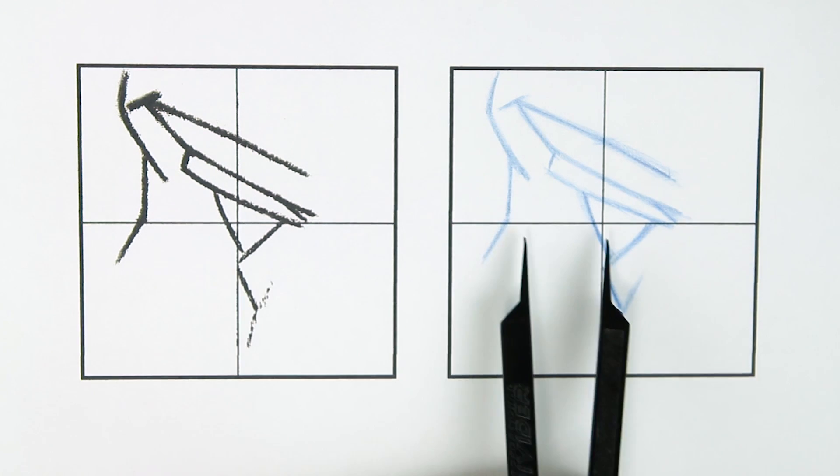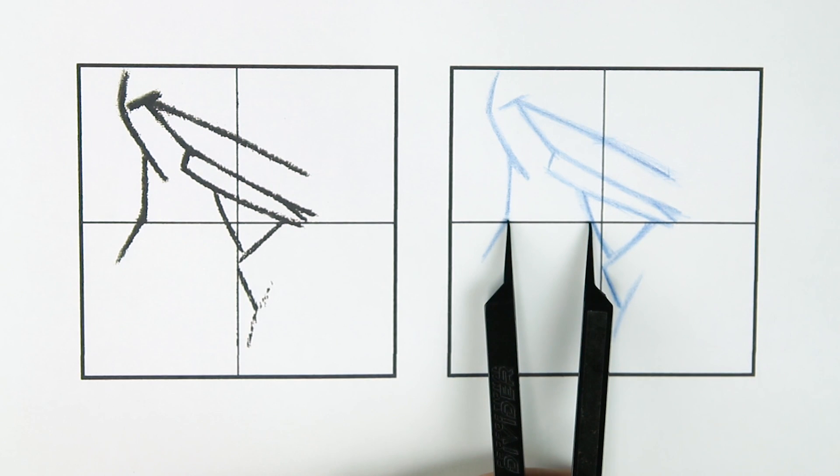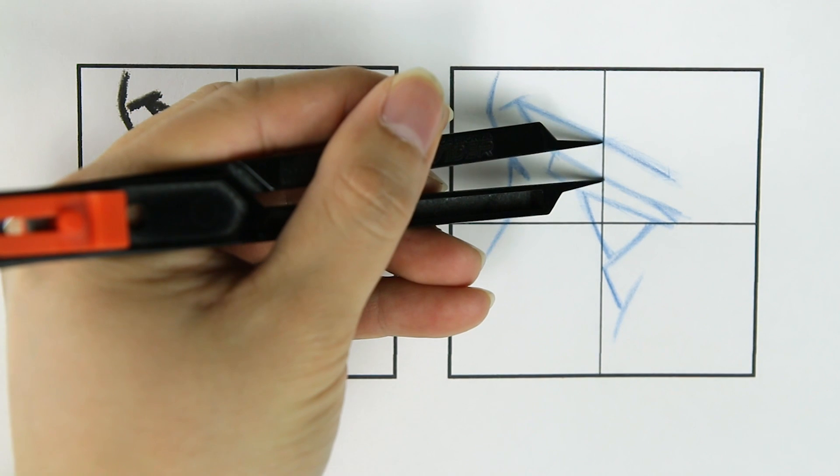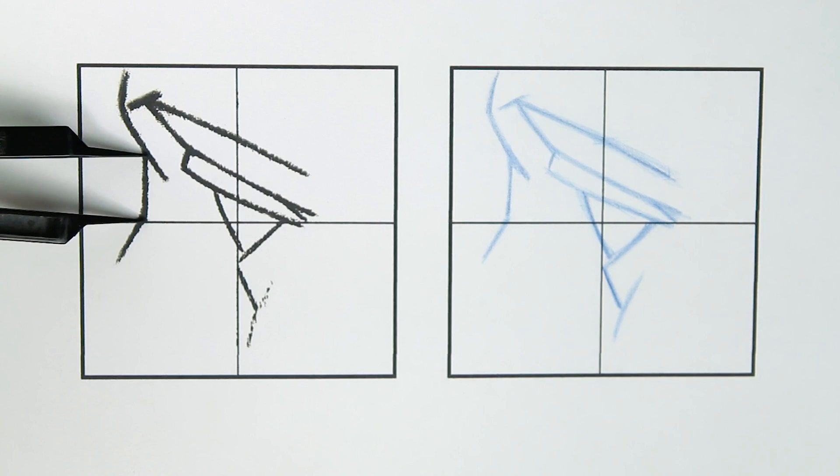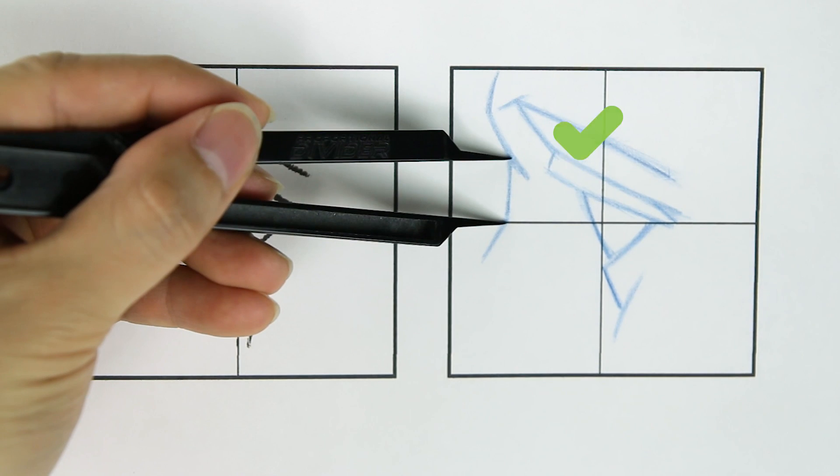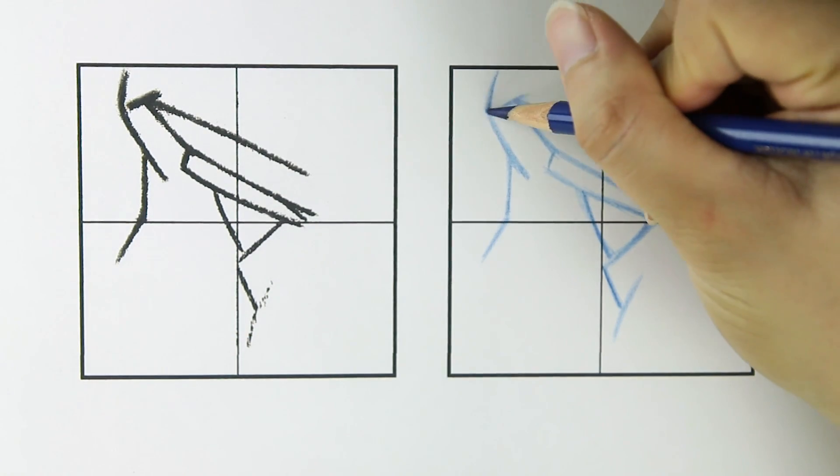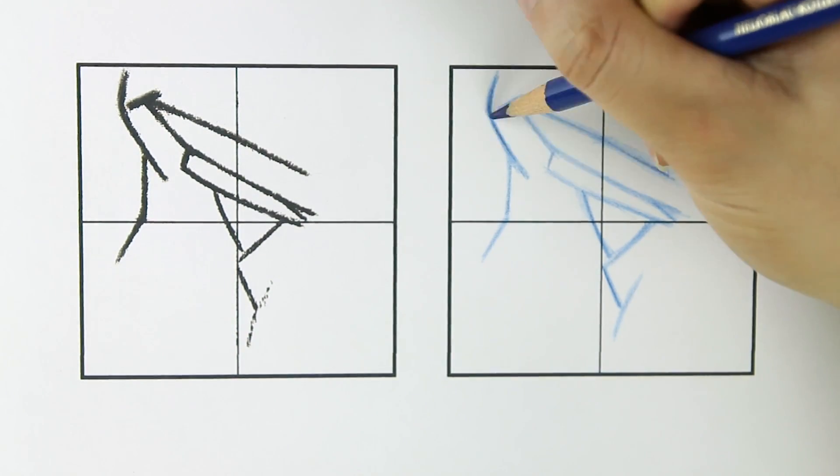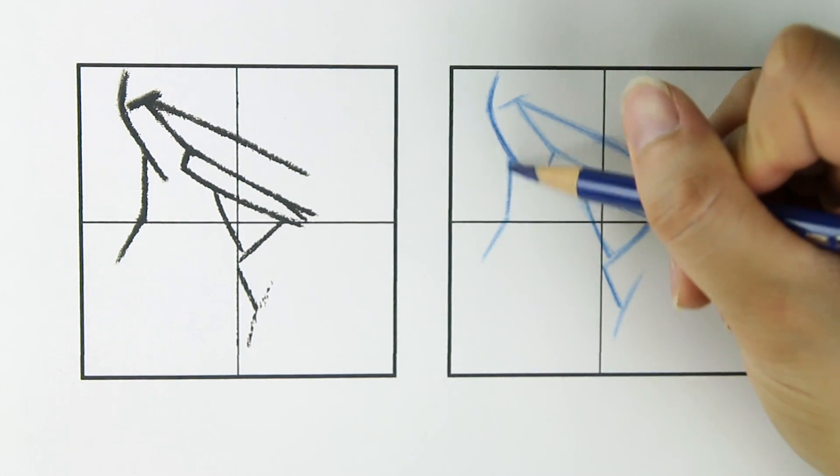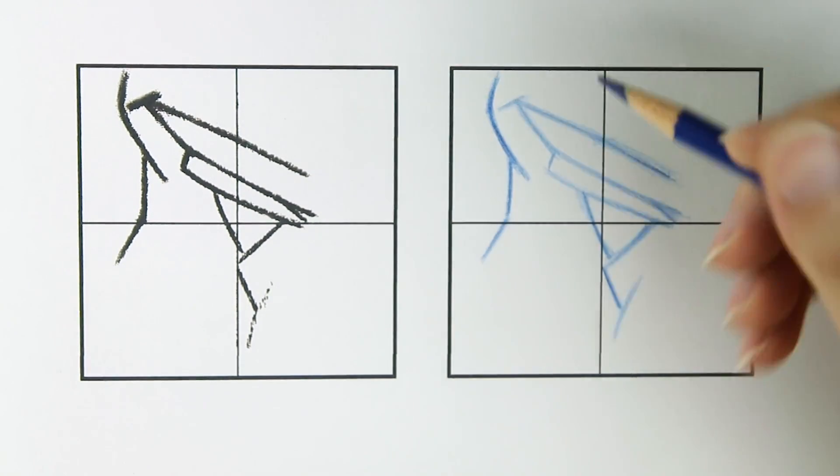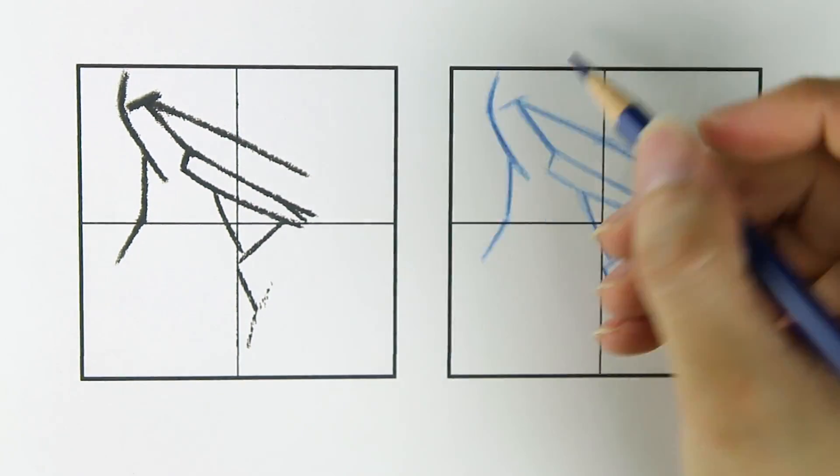I'll check the various distances to make sure that they match. And once you're happy with the drawing, darken and clean up the lines. I like to add some line weight variations by making certain segments darker than others. This helps to add some interest to the drawing.